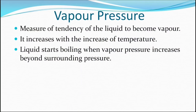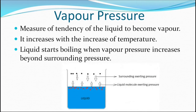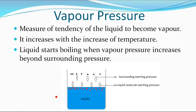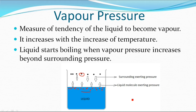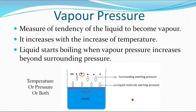To understand cavitation, first we have to understand vapor pressure. Vapor pressure is a measure of the tendency of a liquid to become vapor. In this diagram, the red dots are water molecules trying to exert pressure on surrounding molecules, and the black dots are surrounding molecules trying to exert pressure on the liquid surface. Boiling or steam formation starts when either the surrounding pressure decreases beyond the vapor pressure of the liquid, or the vapor pressure of the liquid increases above the surrounding pressure. This can be done by altering temperature, pressure, or both. Heating the liquid increases its vapor pressure, so boiling starts. Similarly, decreasing the surrounding pressure below vapor pressure also starts boiling.